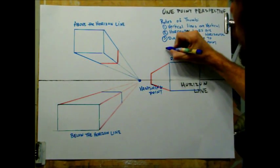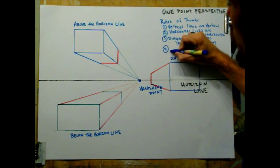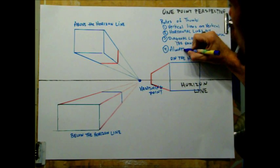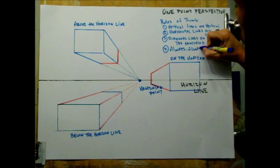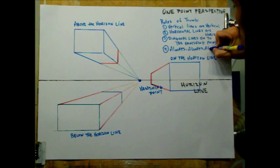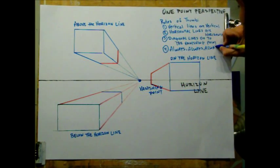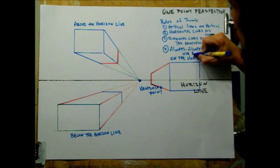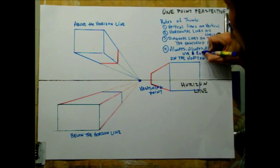And this one is on the horizon line. The last rule of thumb is rule number four. And it is always, always, always, always, what do you think? You got it.